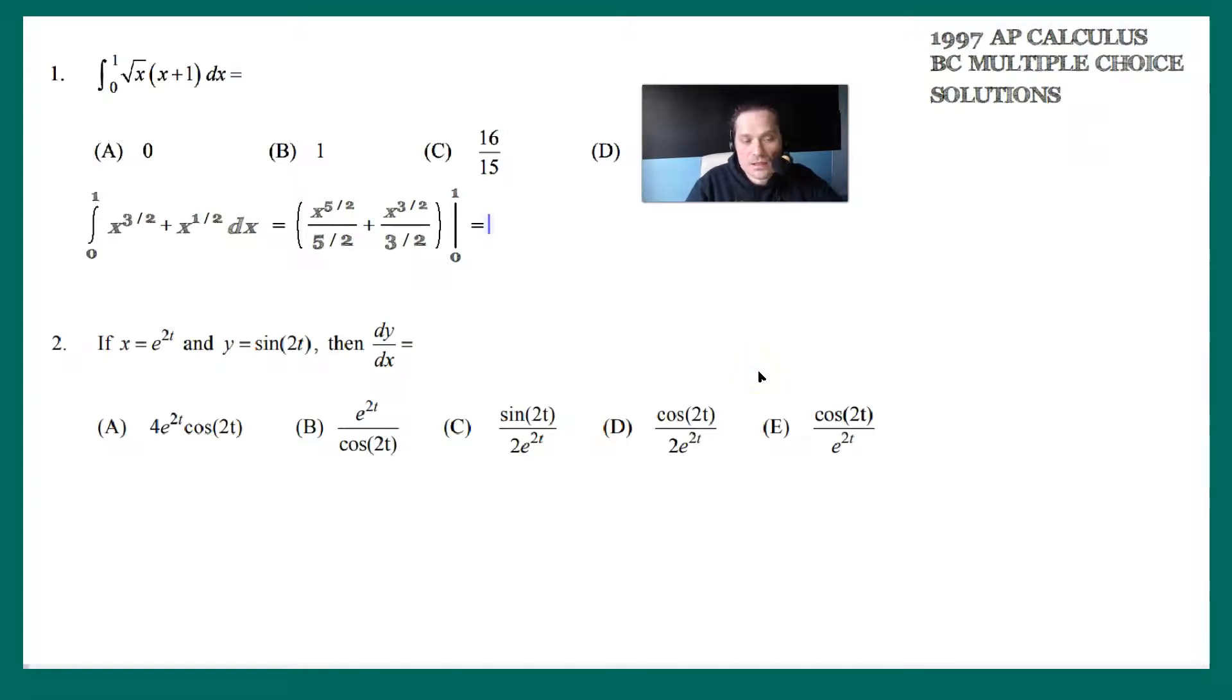Notice that when you replace x with 0, those terms will vanish and only the ones that contain 1 will be left over. And of course that 5 halves in the bottom becomes 2 fifths. So in other words, you end up with 2 fifths of basically 1 raised to the 5 halves, and then plus the second term, which is 2 thirds times 1 to the 3 halves. The other two terms with x vanish. So this basically becomes 2 fifths and then plus 2 thirds, because 1 to the 5 halves is 1 and 1 to the 3 halves is 1.